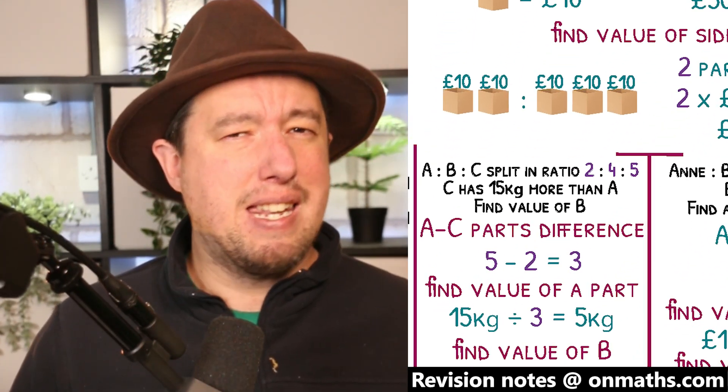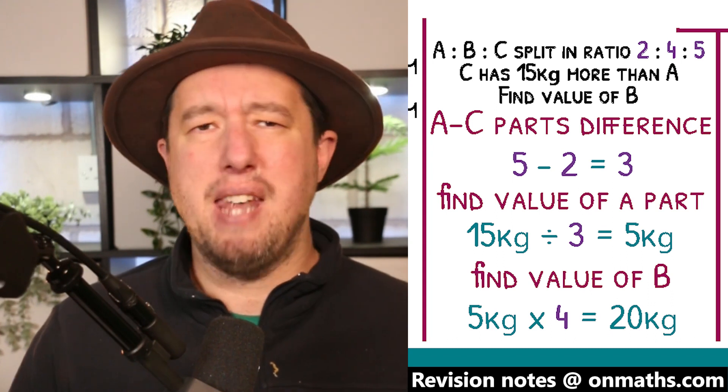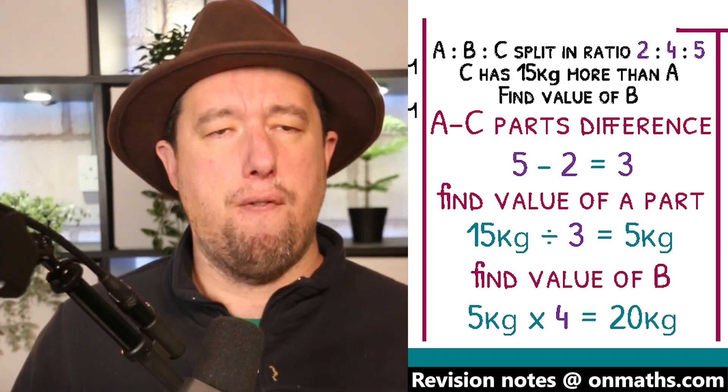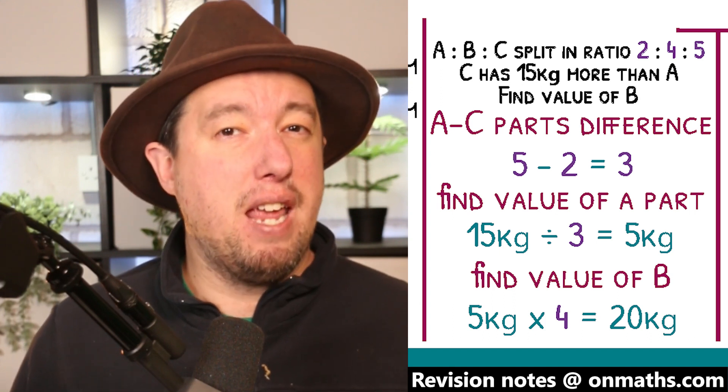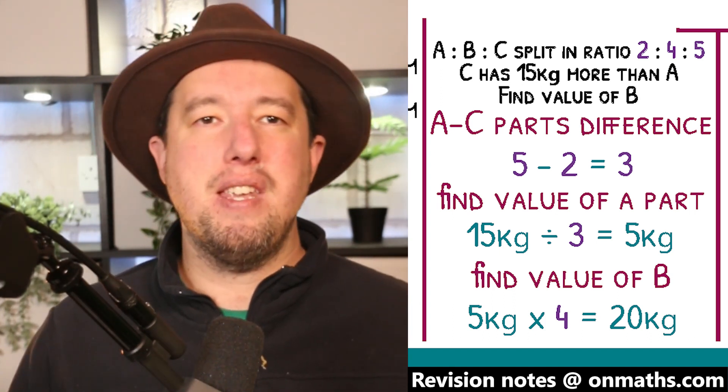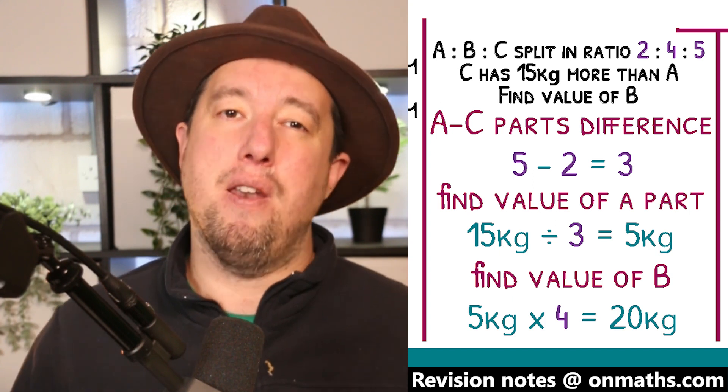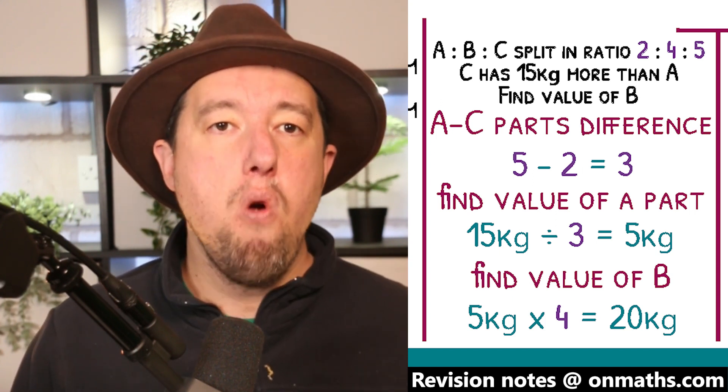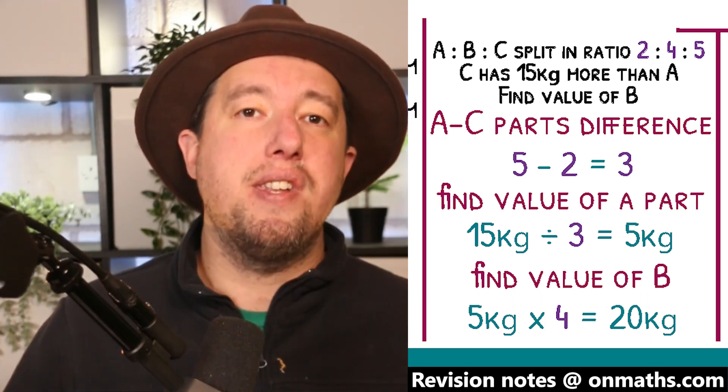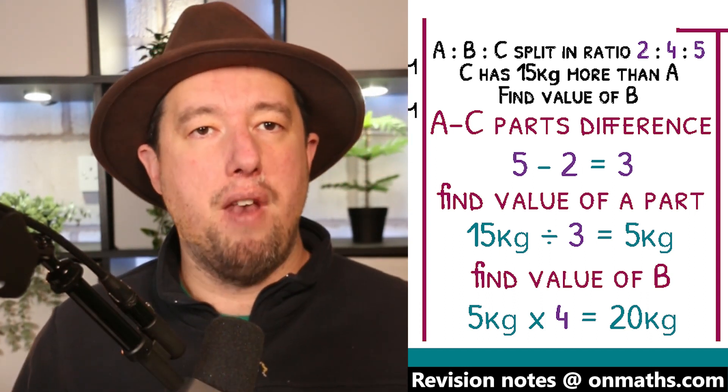Cheese is split between 3 boxes, A, B, and C, in the ratio of 2 to 4 to 5. C has 15 kilograms more than A. Find the amount in box B. Our goal for these types of questions is to find the amount of each part, but we no longer have the total amount. This is not a problem though, since we know that C has 15 kilograms more than A,